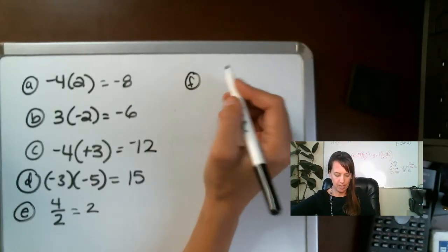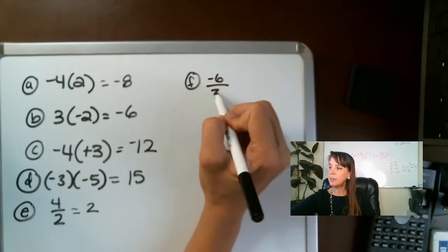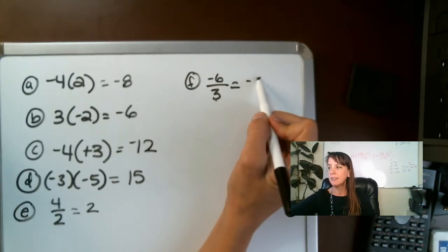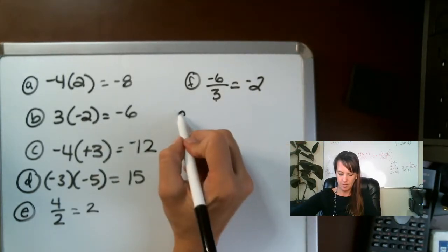We have F. Negative six divided by three. A negative divided by a positive, different signs. Negative two.